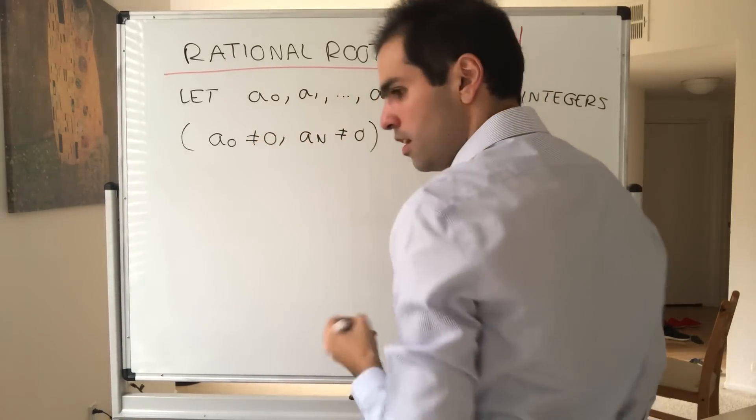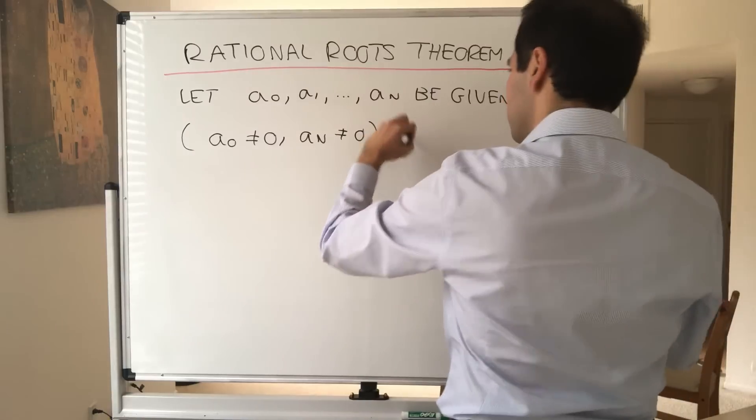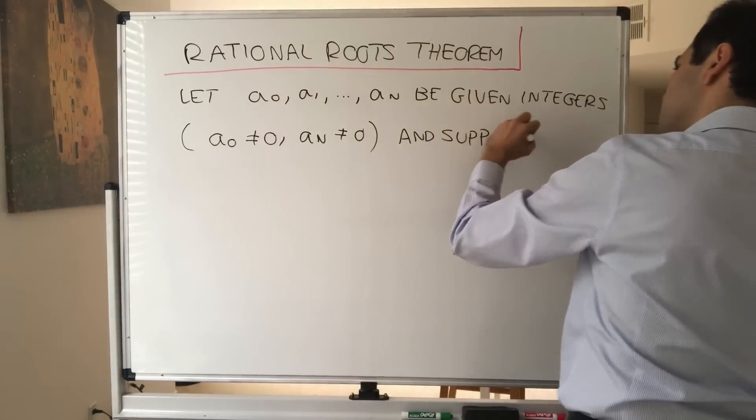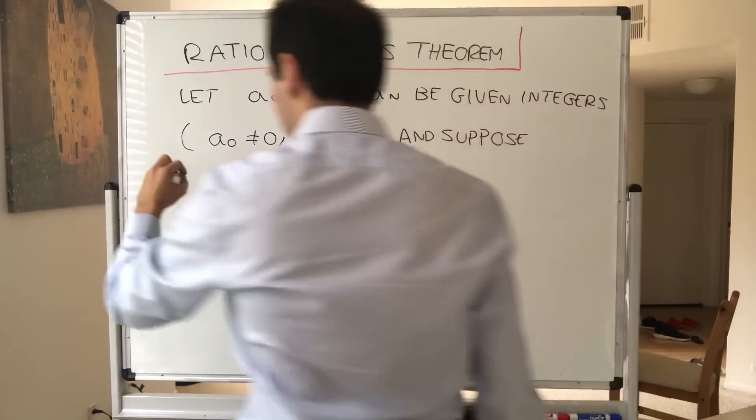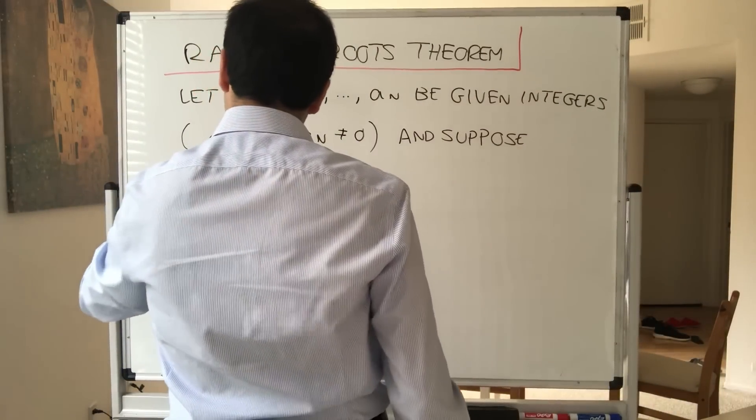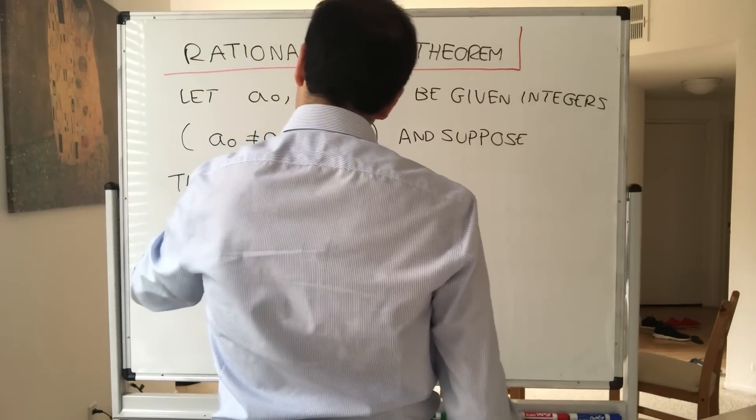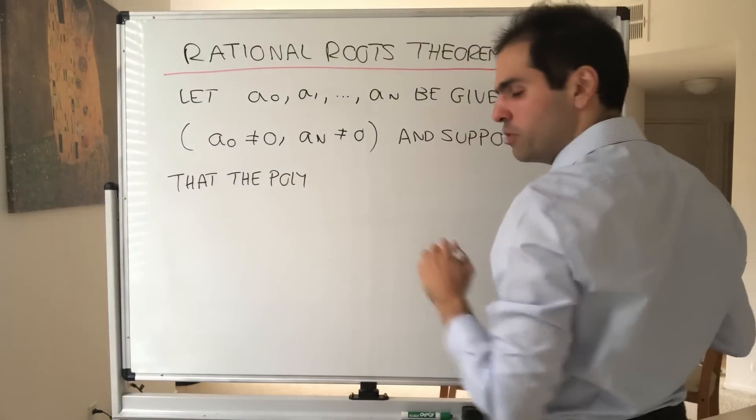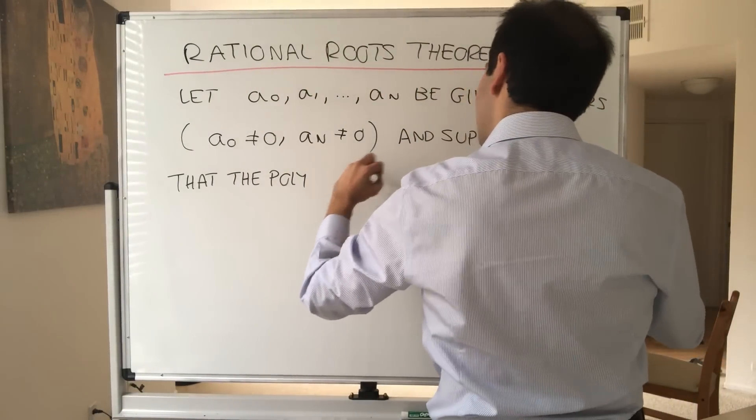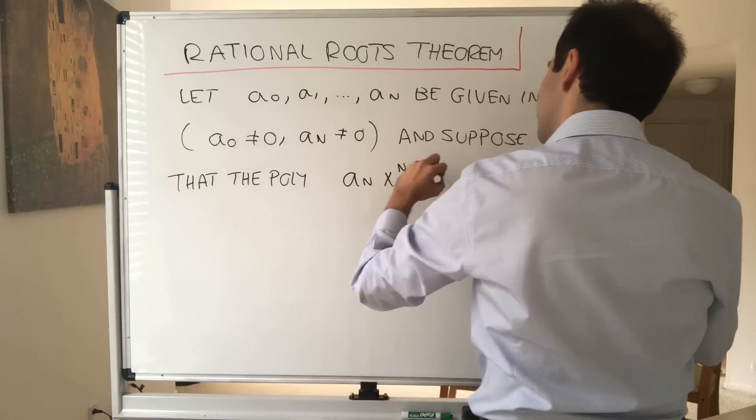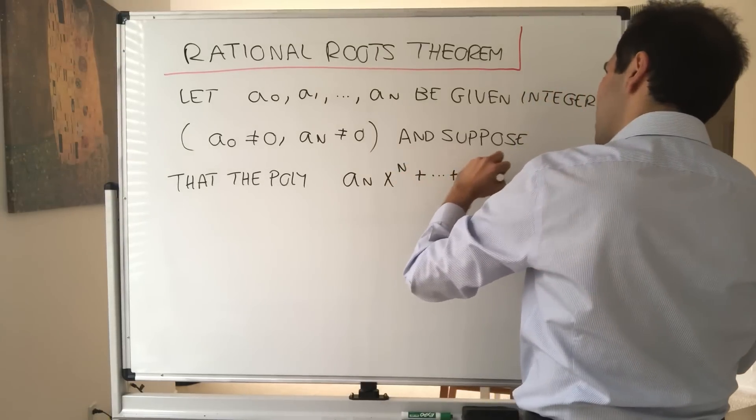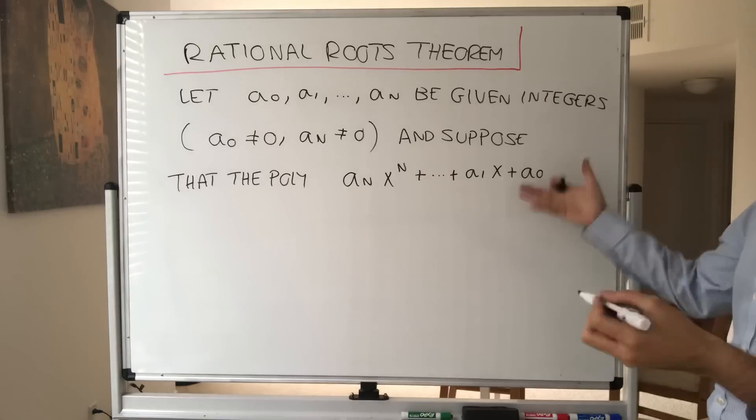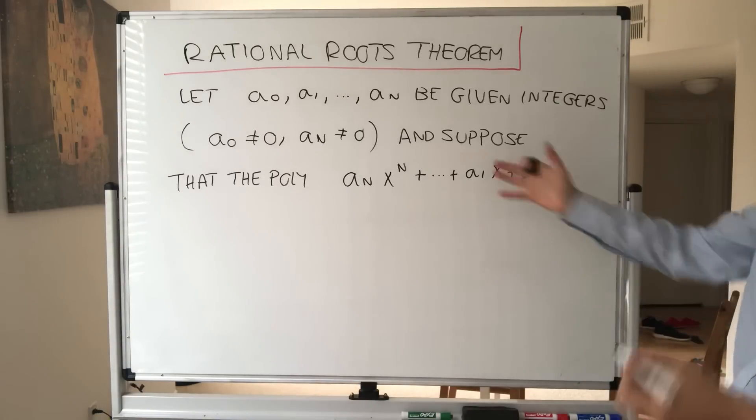And suppose the following polynomial: the polynomial with coefficients a₀ up to aₙ, so aₙxⁿ plus dot dot dot plus a₁x plus a₀, has a zero that is rational. In other words, it has a rational root.